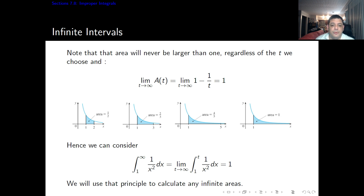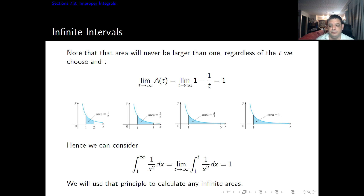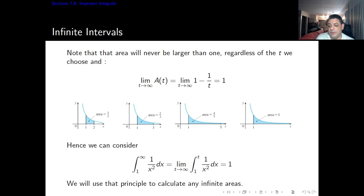If we make t equal 2, the area is 1/2. If t equals 3, the area is 2/3. If t equals 5, the area is 4/5. And when we let t go to infinity, we get that it's going to be 1. Hence, we can consider that the integral from 1 to infinity of 1 over x squared dx can be seen as the limit when t goes to infinity of the integral from 1 to t of 1 over x squared dx, and that equals 1.